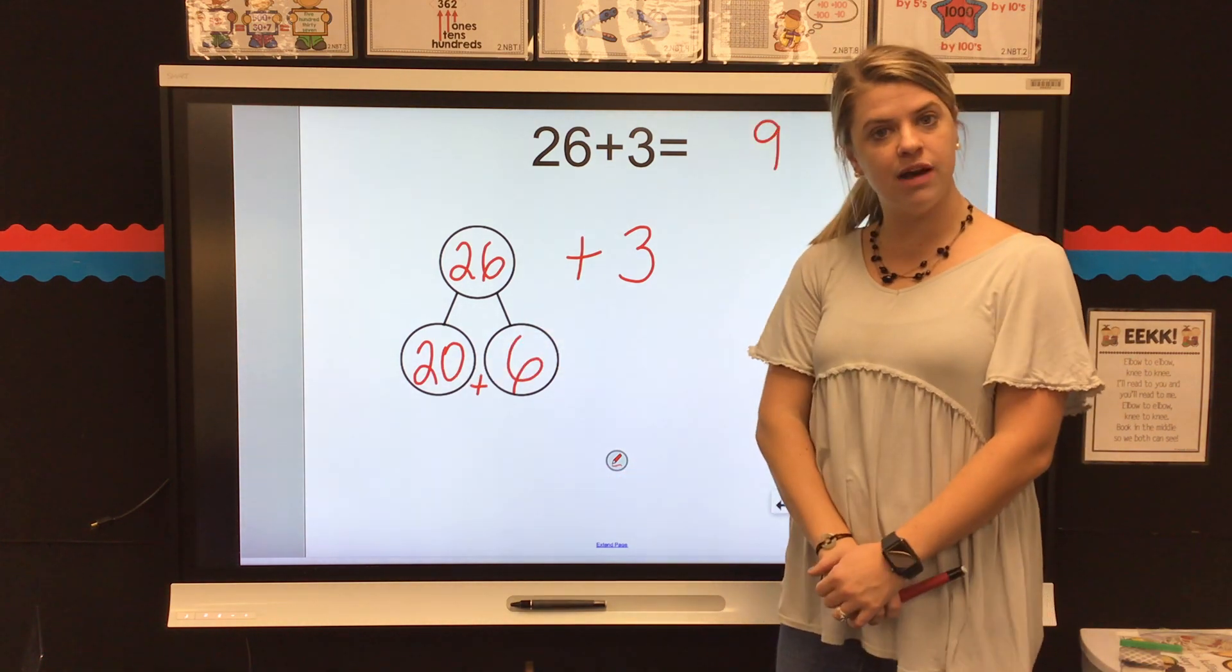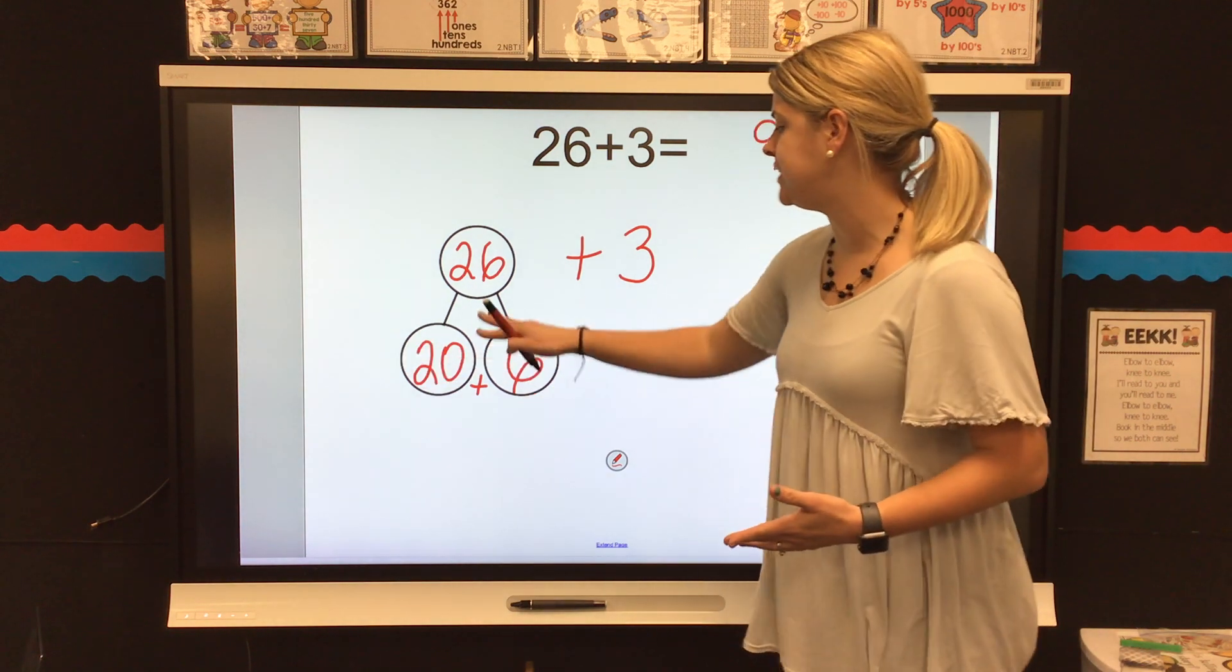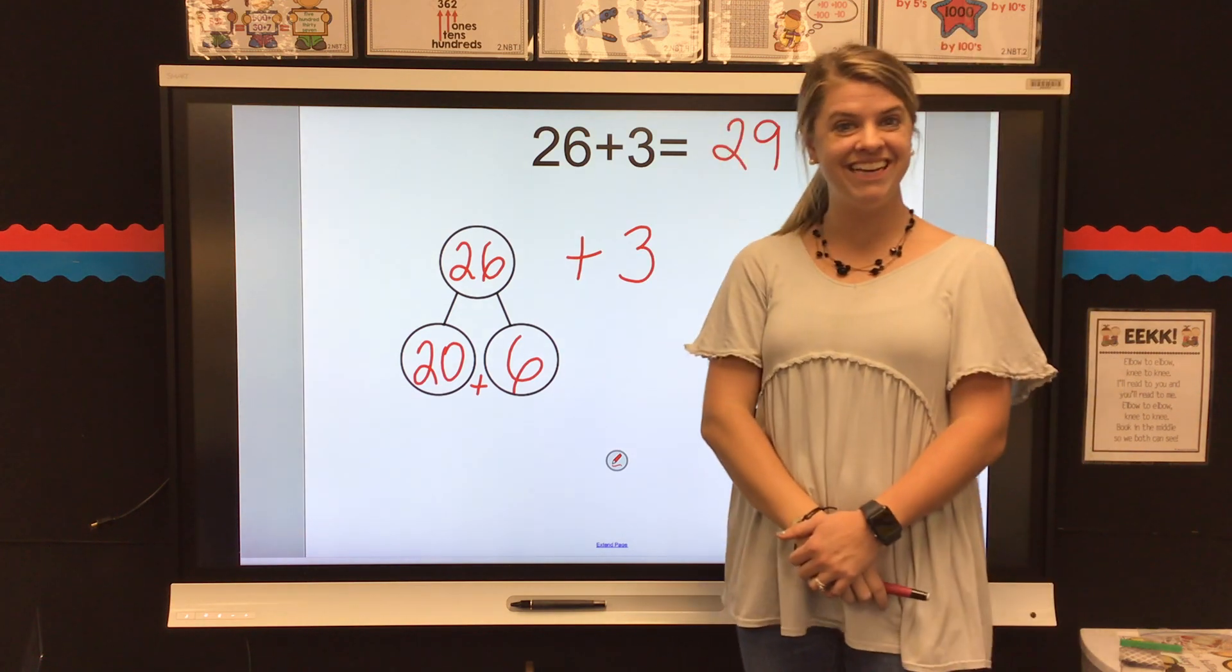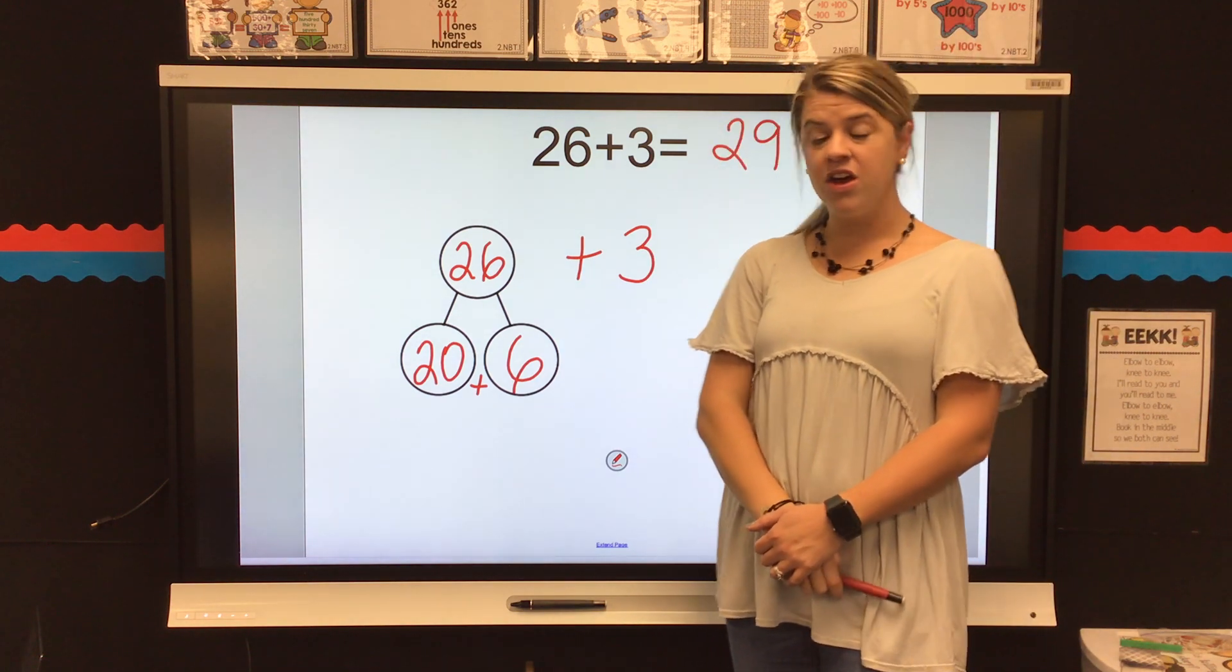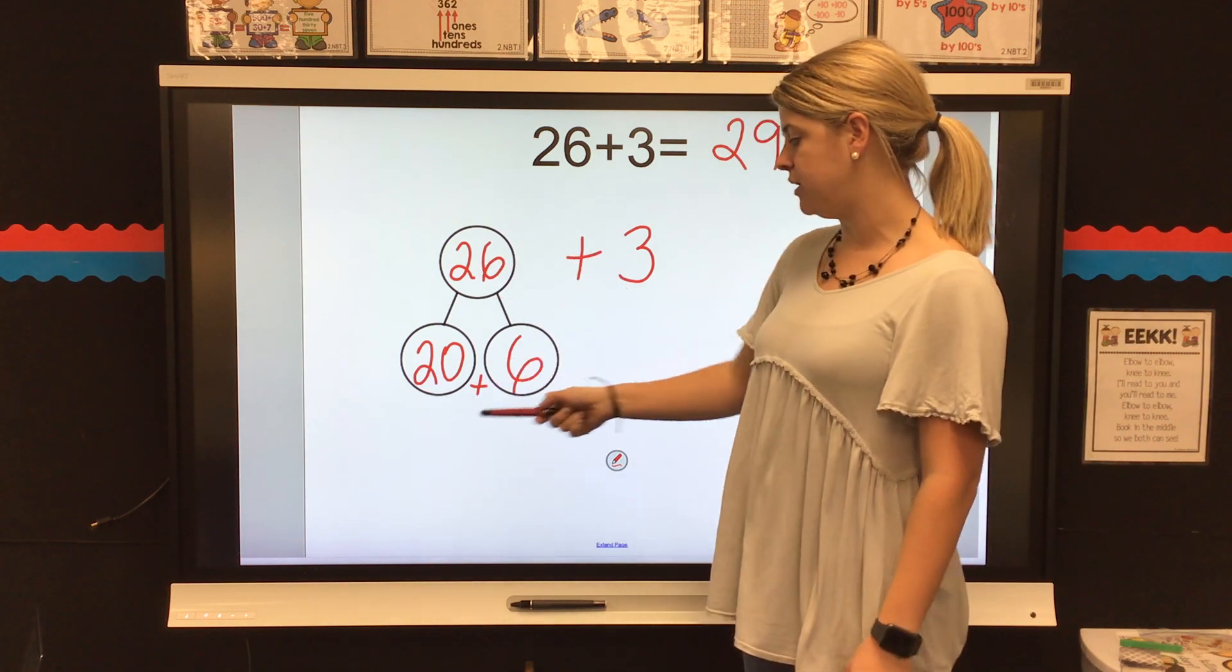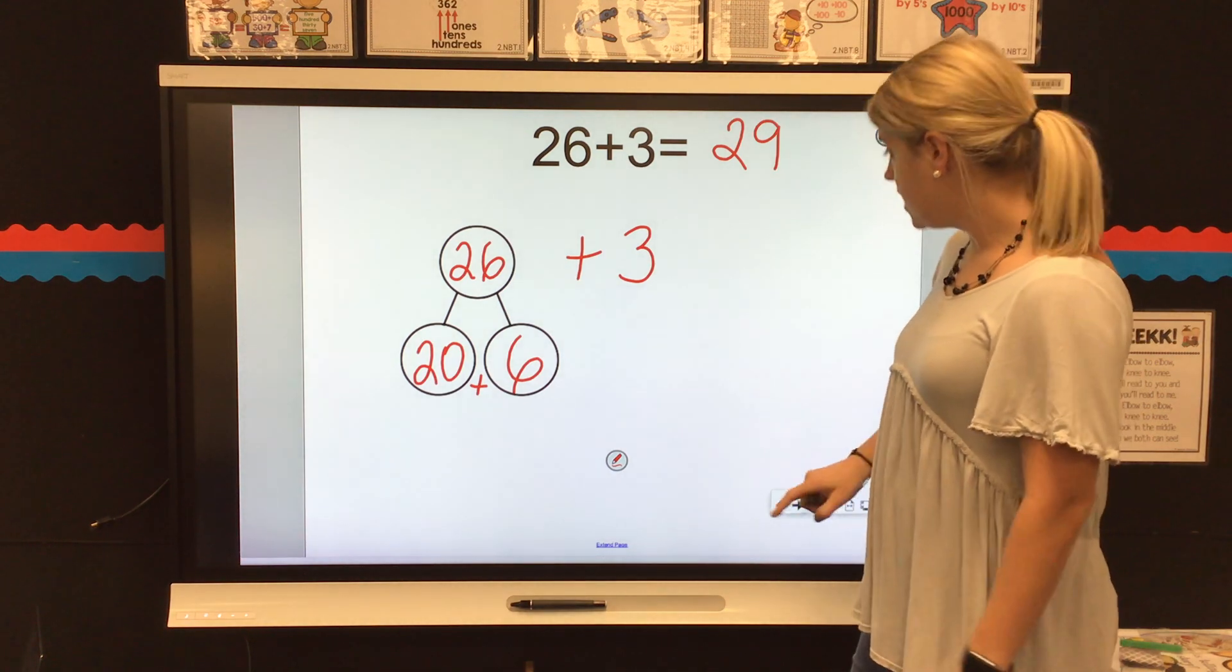And how many tens do I have? Two or 20, so now I have 20 plus 9 equals 29. So, we decompose the number 26 into 20 plus 6. And now we have 20 plus 6 plus 3. Let's try another one.